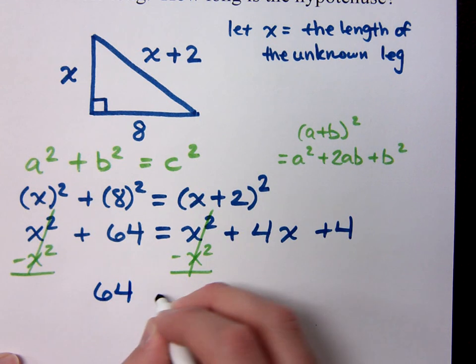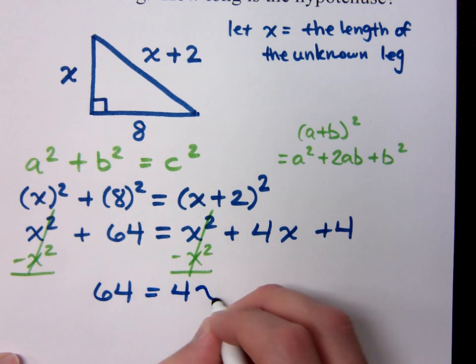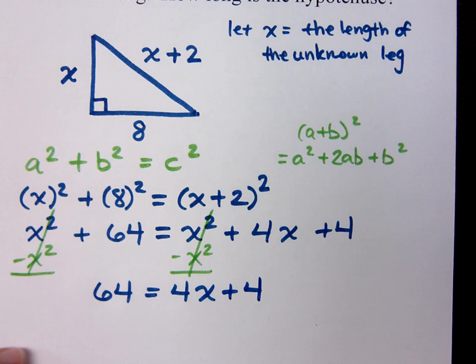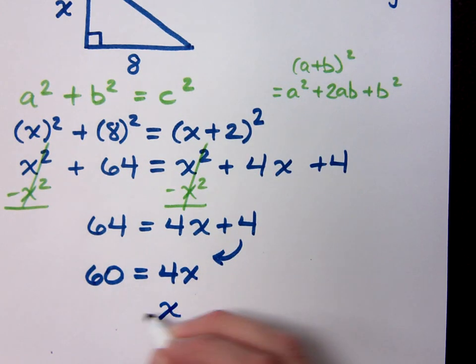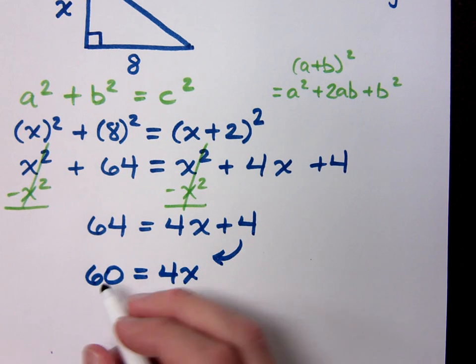I've got this guy right here. I've got the 64 equals 4x plus 4. That's not quadratic. That's linear. So if it's linear, I solve it just like I solved at the very beginning of this semester. What would I do to get x by itself? I'm going to move the 4 to the other side, so what do I get? 60 equals 4x. Divide by 4 to get x by itself, and what do we have? 60 divided by 4 is 15.